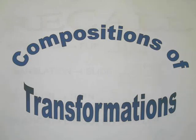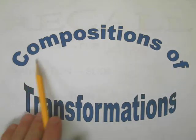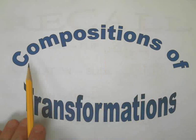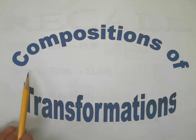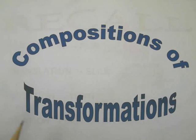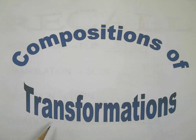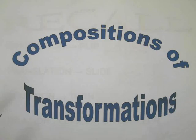In this video I'm going to be talking about compositions of transformations. A composition means a combination of multiple things — like when we did composite volume with cones and cylinders put together to find the total volume. We're going to do multiple transformations, like maybe a rotation then a reflection, and put that stuff together into one long process.